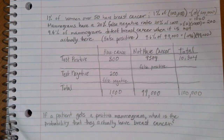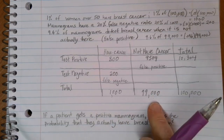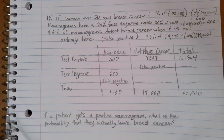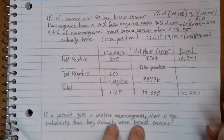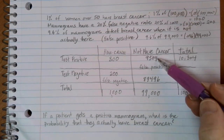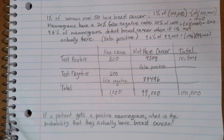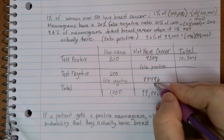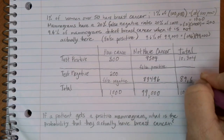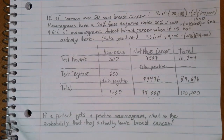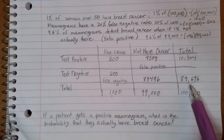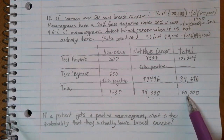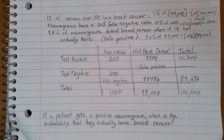Now we have enough to fill everything else out. Of the 99,000 people without cancer, 9,504 got a positive test, so subtracting gives us 89,496 people who were correctly diagnosed as not having cancer. Adding across: 200 plus 89,496 gives 89,696 total negative test results. We can double-check: 10,304 positive tests plus 89,696 negative tests gives exactly 100,000 people. The contingency table is now entirely filled out.